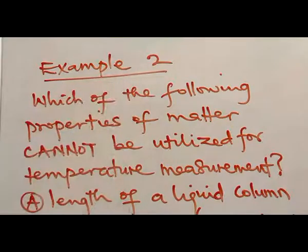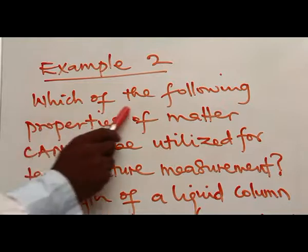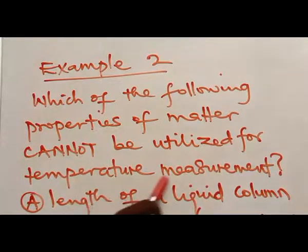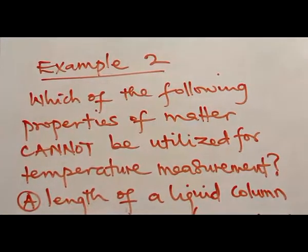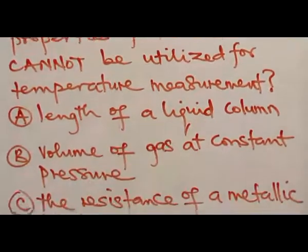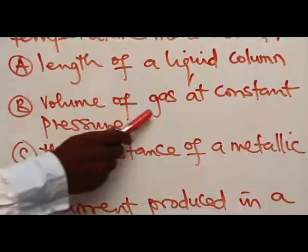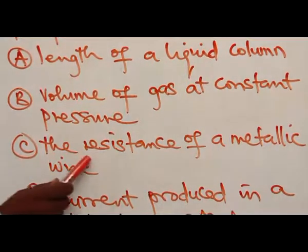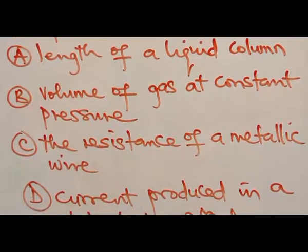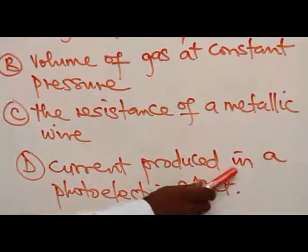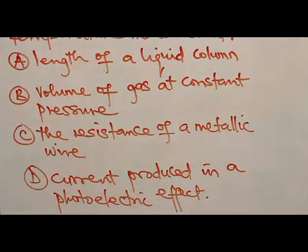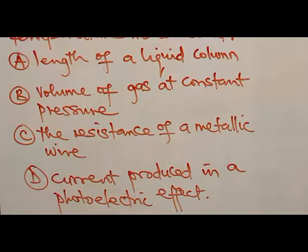Example 2: Which of the following properties of matter cannot be utilized for temperature measurement? A. Length of a liquid column. B. Volume of gas at constant pressure. C. Resistance of a metallic wire. D. Current produced in a photoelectric effect.